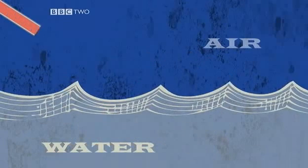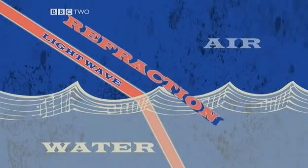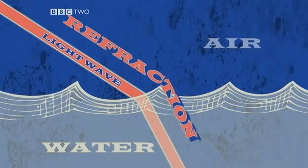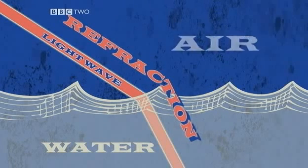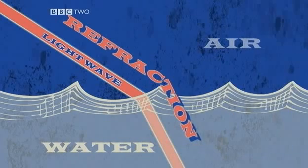Now onto the next wave thing: refraction. It sounds a bit like reflection but it's totally different. When a light wave enters water it changes direction slightly — this is called refraction. It happens when light crosses between materials of different densities, like air, water, glass, or transparent plastic.